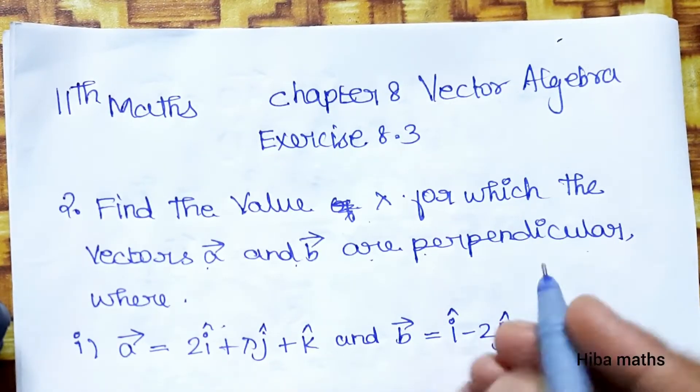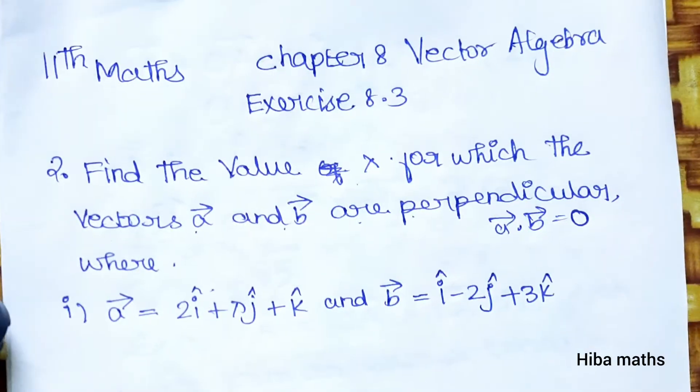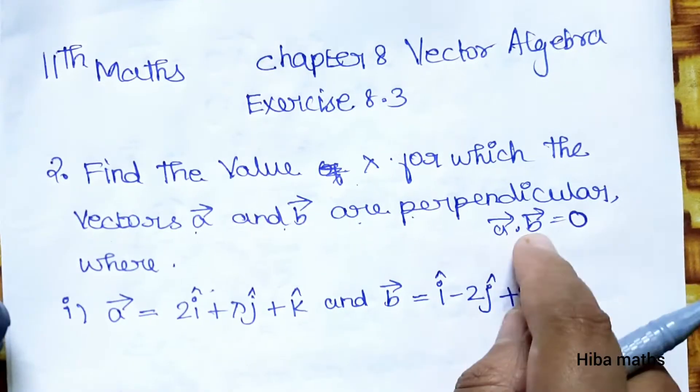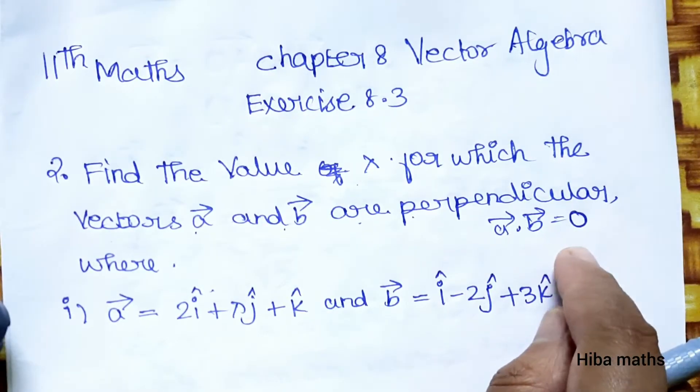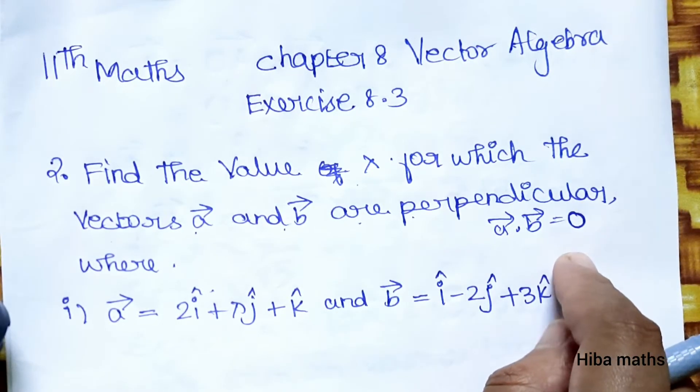What is perpendicular? If the dot product of vector A and vector B equals 0, then the vectors are perpendicular.